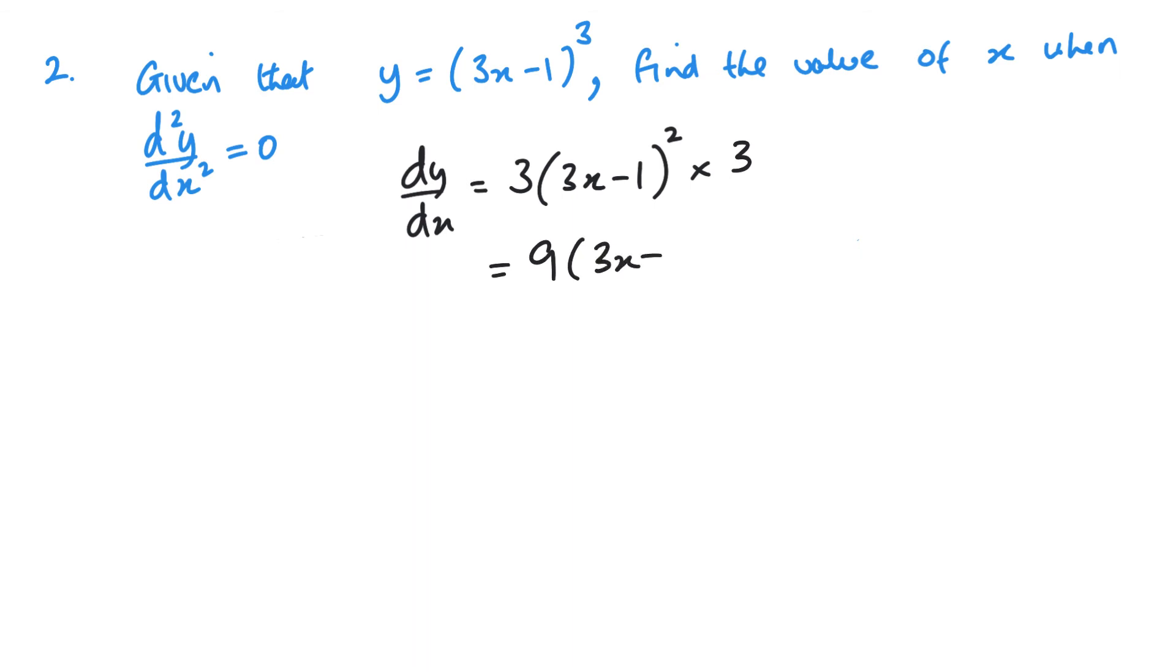So, differentiated a second time, bring down my power, 18, 3x minus 1, times, and the inside differentiated is 3. So, that gives me 54, 3x to the minus 1.